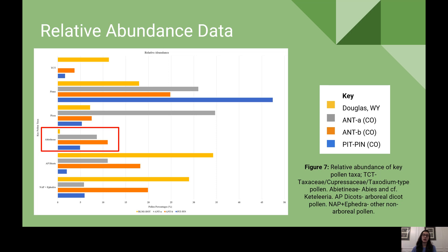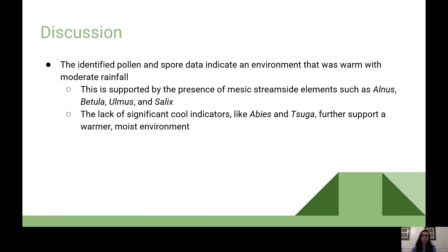Another key difference was the lack of Abies pollen—fir. Our data showed less than 1% Abies, compared to approximately 10% reported in other nearby localities. Since Abies is generally identified as a cold-adapted taxon, this lack suggests a warmer environment, as does the absence of other cooler-adapted taxa like hemlock. The pollen and spore data indicated an environment that was warm with moderate rainfall, supported by the presence of streamside elements like alder, birch, and willow, and by the presence of fern spores pointing to a moist environment.